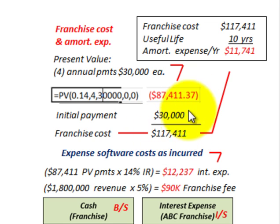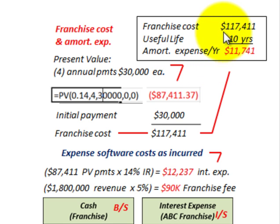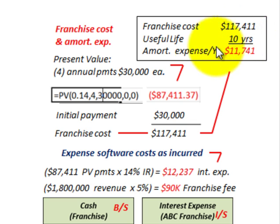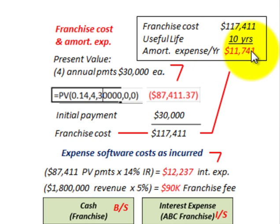Knowing our cost, we can determine the amortization expense per year. The franchise cost of $117,411 divided by a useful life of 10 years gives us an amortization expense of $11,741 per year.